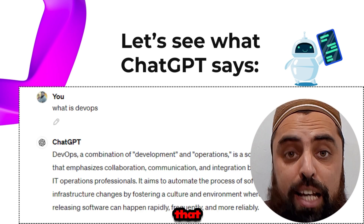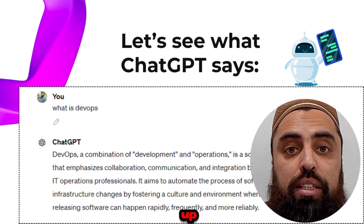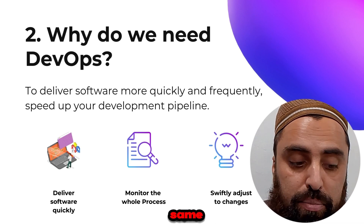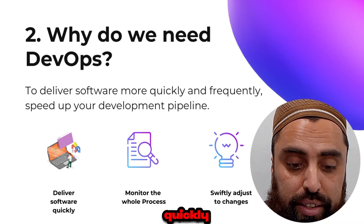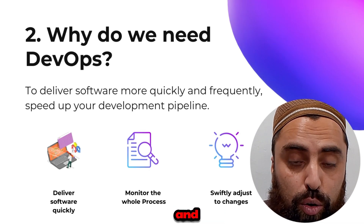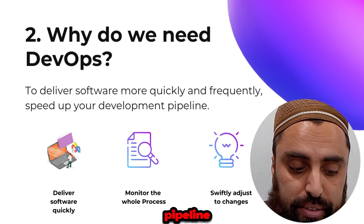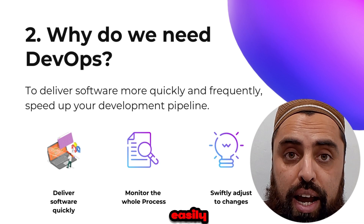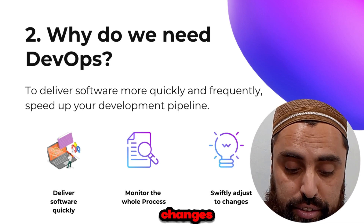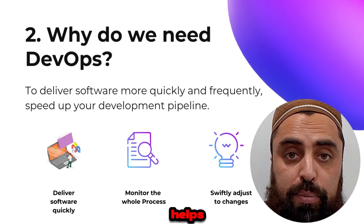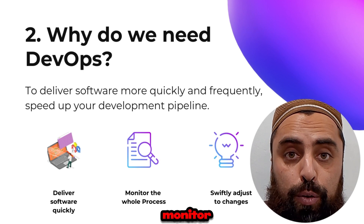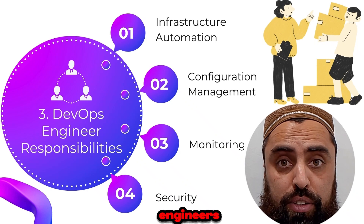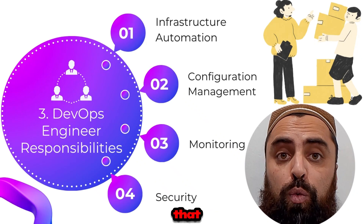It fosters a culture and environment where building, testing, and releasing software can happen rapidly, frequently, and more reliably. From the DevOps definition we learn that DevOps speeds up the delivery of software. We need DevOps to deliver software quickly and frequently, speed up the development pipeline, roll back easily in case of failures, swiftly adjust to changes, and monitor application performance.